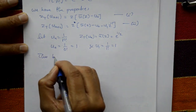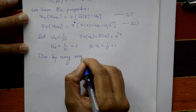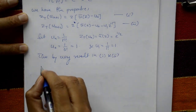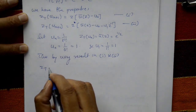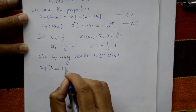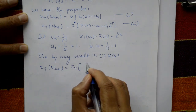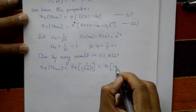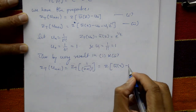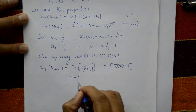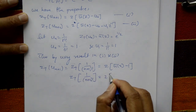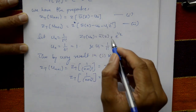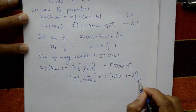Using these results, where u_n equals 1 upon n factorial and U-bar of Z equals e to the power 1 by Z: the Z transform of 1 upon n plus 1 factorial equals Z times e to the power 1 by Z minus U_0, which is Z times e^(1/Z) minus 1. Next, the Z transform of 1 upon n plus 2 factorial equals Z squared times e^(1/Z) minus Z times U_0 minus U_1, giving Z squared times e^(1/Z) minus Z minus 1. This is the required solution.